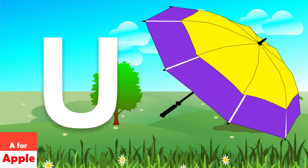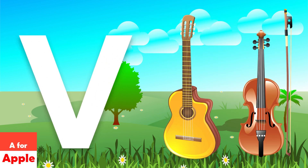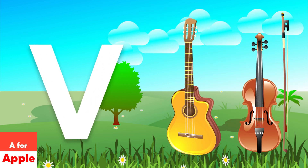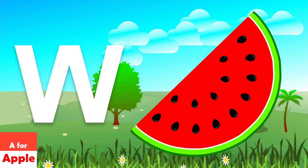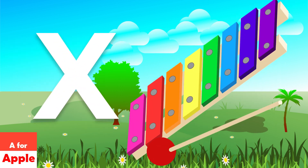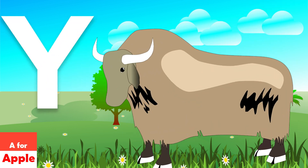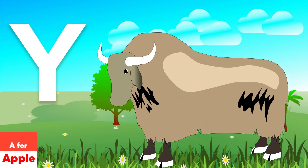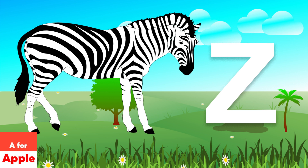U for umbrella, V for violin, W for watermelon, X for xylophone, Y for yard, Z for zebra.